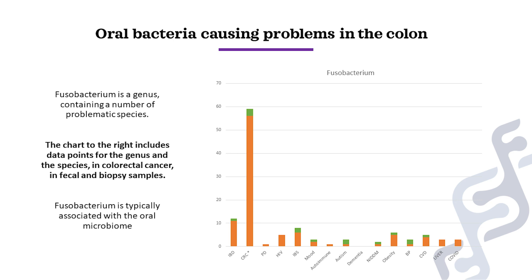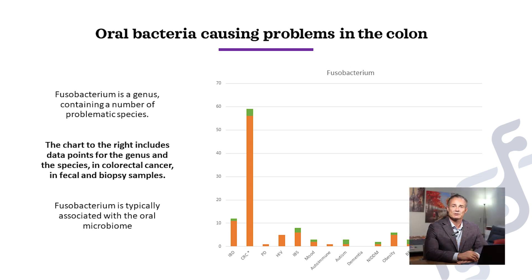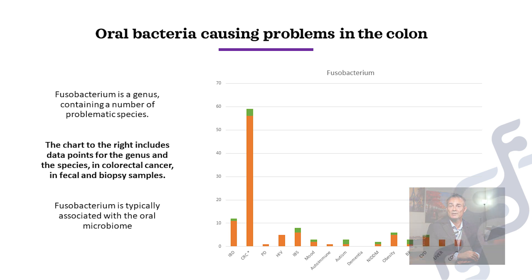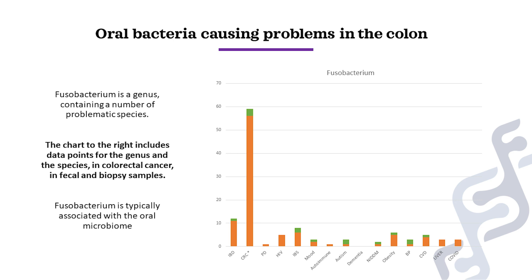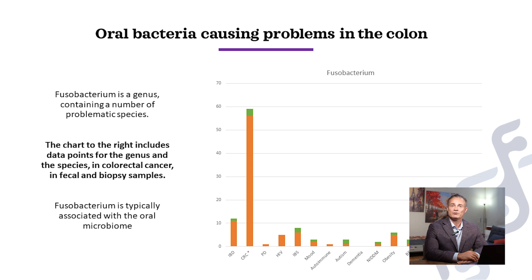Continuing on the theme of problematic oral bacteria causing problems systemically, we look at the genus Fusobacterium and its connection to colorectal cancer. The microbiome profile for colorectal cancer is very unique among the conditions I've analyzed. There are a number of bacteria associated with colorectal cancer, but Fusobacterium is far and away the number one suspect. The chart shows in orange individual studies where subjects with various health conditions had significantly more Fusobacterium than healthy controls, while green is the opposite. Fusobacterium is clearly correlated with disease, with an enormous spike in CRC — colorectal cancer.